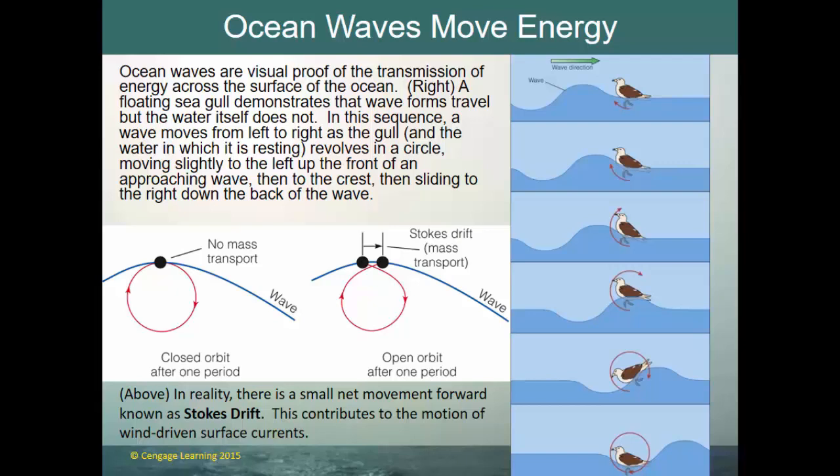There is no mass transport — the energy moves through the water. In the actual wave, there is a very small amount of movement known as Stokes drift, which is the amount of transport that actually happens in an ocean wave. There's a small net movement forward, and that contributes to the motion of wind-driven surface currents.